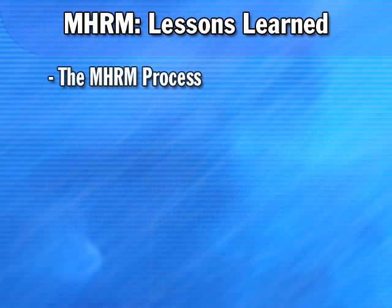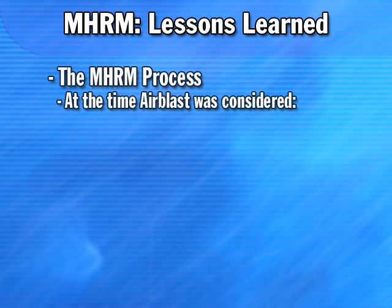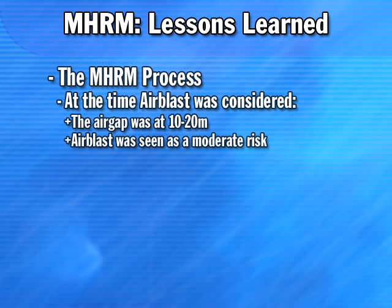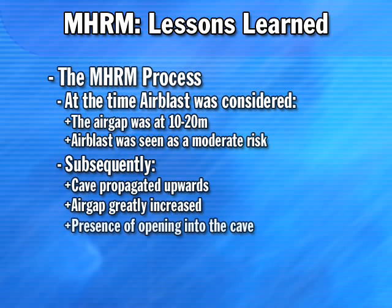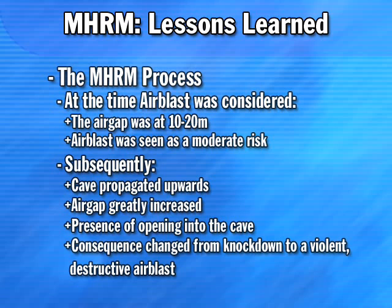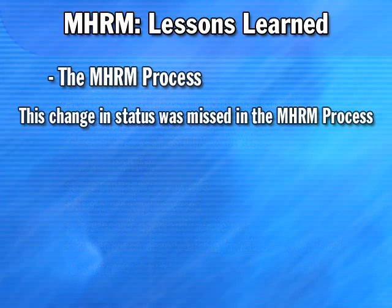A major hazard risk management process was in place at North Parks. However, when the air blast related hazard was considered, the air gap was 10 to 20 metres. At that time a potential event could generate enough energy to knock a person down, and as such it was seen, probably correctly, as a moderate risk, not warranting major hazard status. However, as the cave propagated and the air gap greatly increased, so too did the potential energy source or the compressed air volume. With the possibility of openings into the cave as it propagated upward toward one level, the potential consequences changed from a moderate knockdown to a violent, destructive air blast. This would have moved the situation into the major hazard area, but the hazard was missed in the major hazard risk management process.